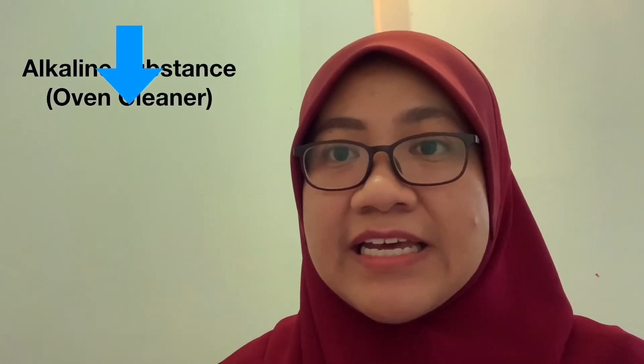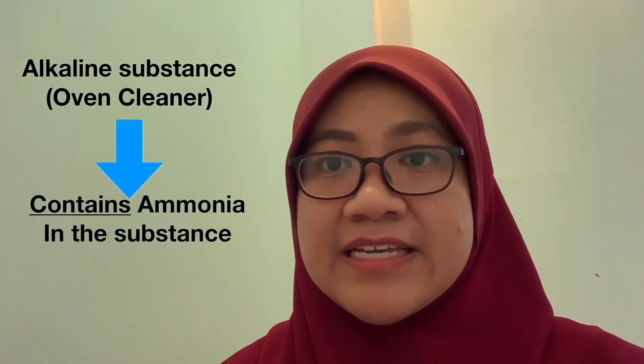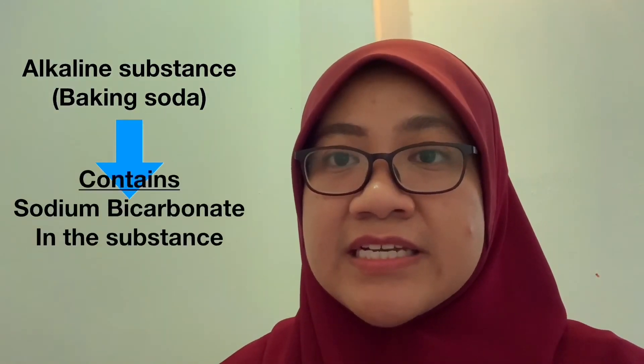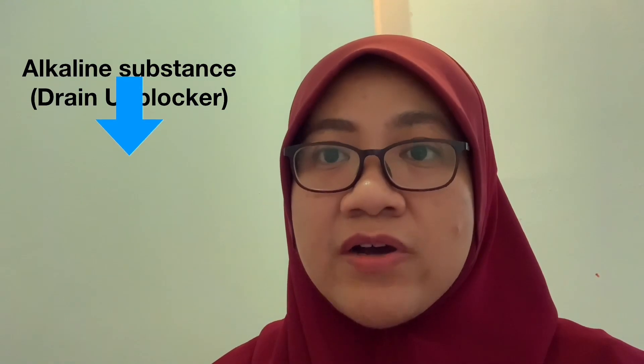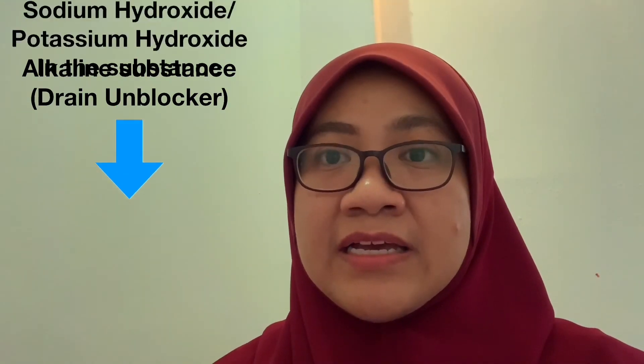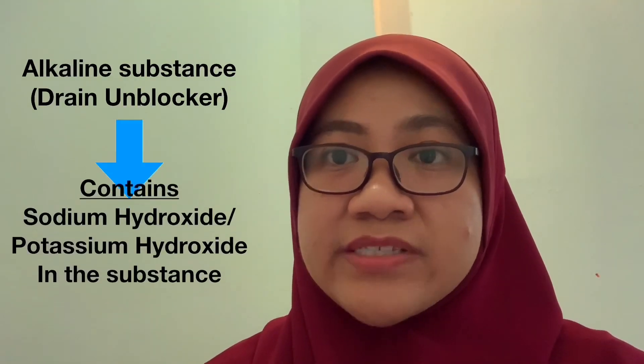Examples of alkaline substances in our daily life include oven cleaner, which contains ammonia; baking soda, which contains sodium bicarbonate; and drain unblocker, which contains strong alkalines such as sodium hydroxide and potassium hydroxide.